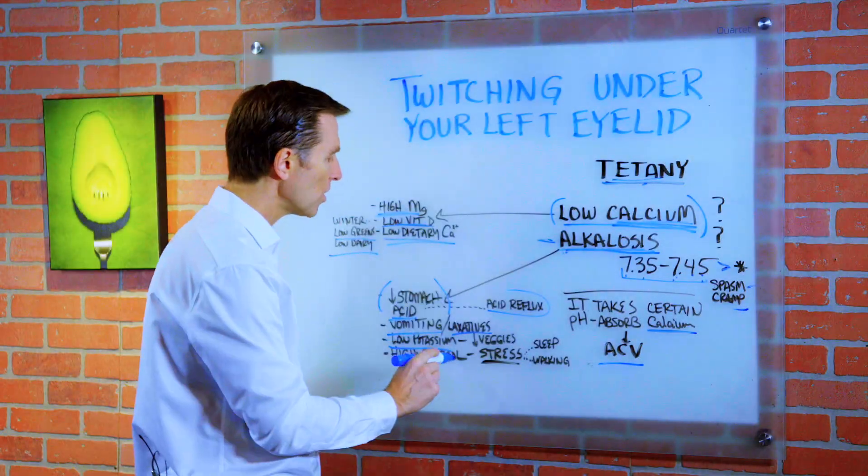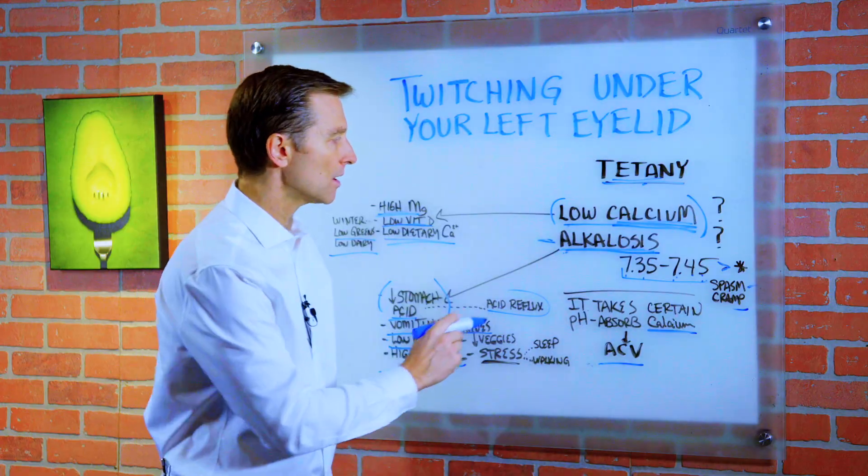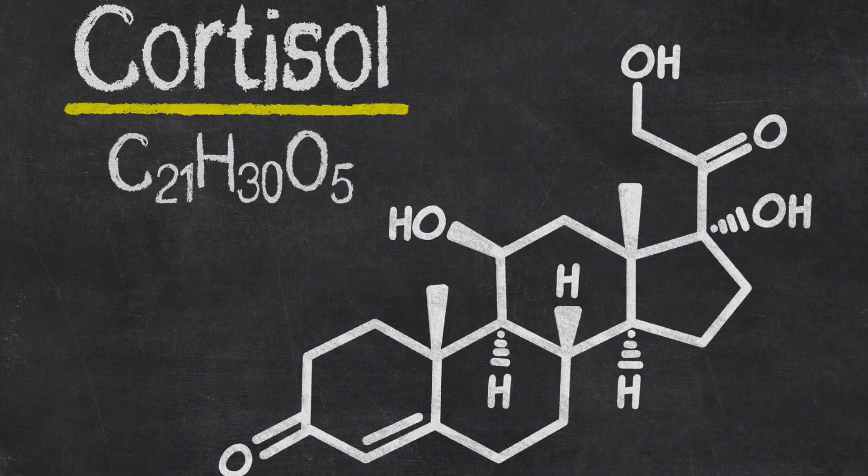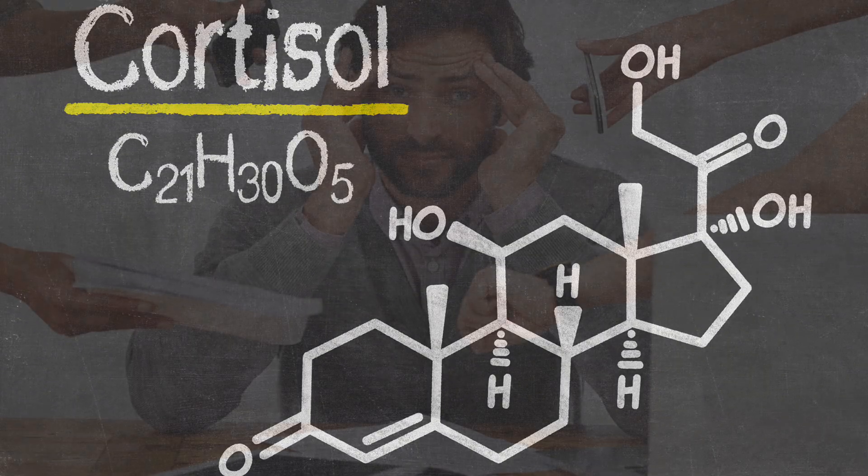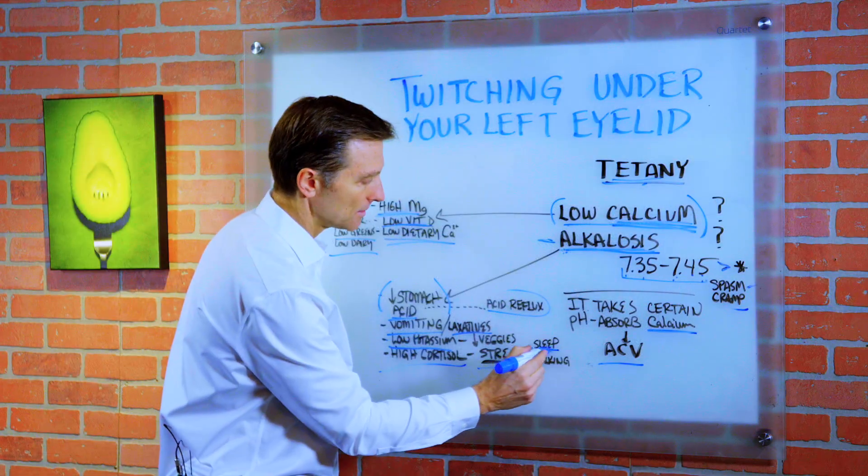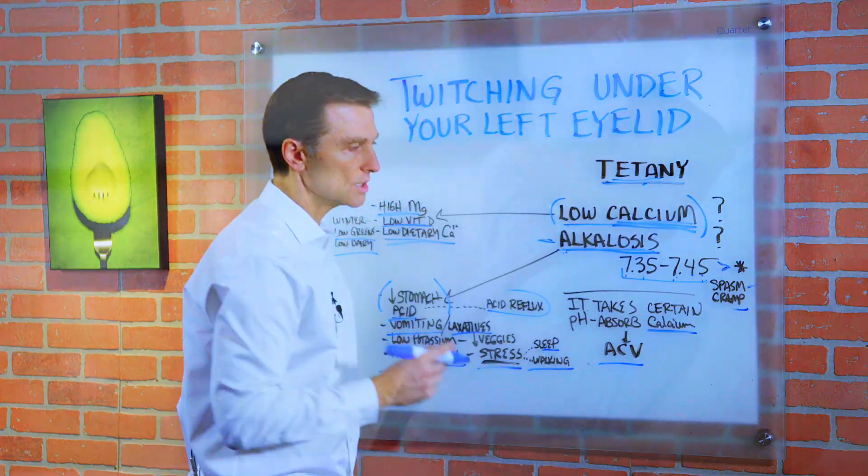And then we also have high cortisol, which could also cause alkalosis. How do you get too much cortisol? By stress. In which case, you need to get more sleep. You need to go for long walks. You need to remove the stress in your life as much as possible.